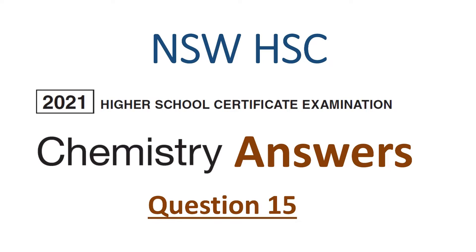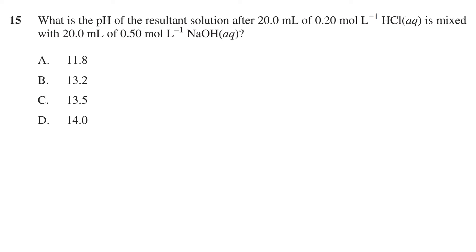In this video we'll go over the answer to question 15 of the 2021 NSW HSC chemistry exam. The question asks: what is the pH of the resultant solution after 20 mL of 0.2 mol per liter hydrochloric acid is mixed with 20 mL of 0.5 mol per liter sodium hydroxide? We have four options ranging from 11.8 to 14.0.